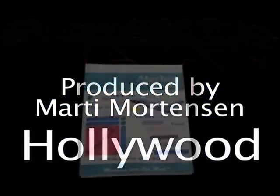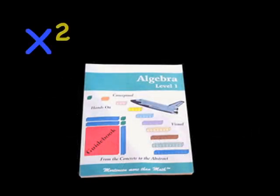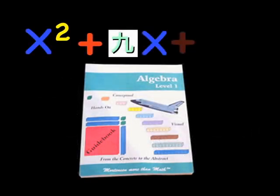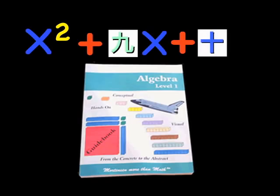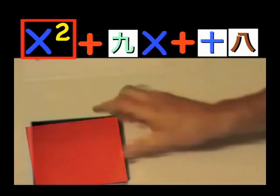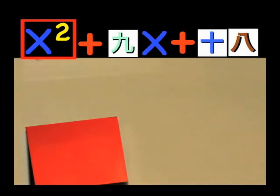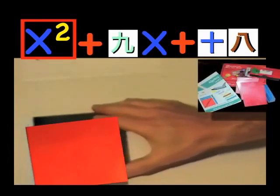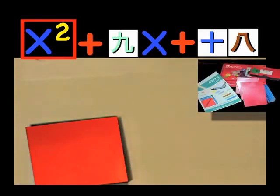We shall do one final problem in book two. Let's factor this expression, x squared plus 9x plus 18. The first amount we get out is, correct, x squared. The second amount we get out is our 18 units.